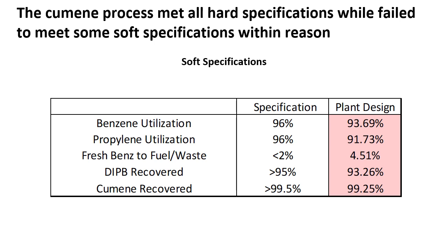I will now cover the soft specifications for our process design. Soft specifications are ones which should be met, but if they aren't, justification can be provided for why they aren't met, as is the case with our process design. As seen in the table, all soft specs were not met perfectly, but our values are quite close to what is required. Attempts to meet these specifications were sought out, but this either required immense increases in costs or resulted in certain hard specifications not being met.